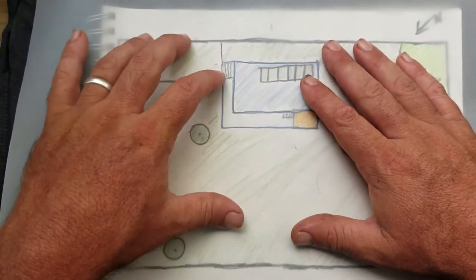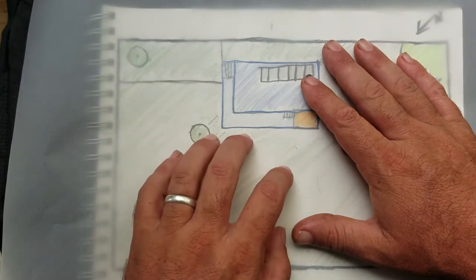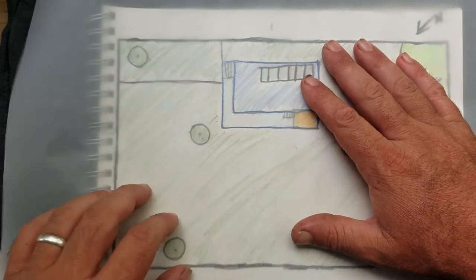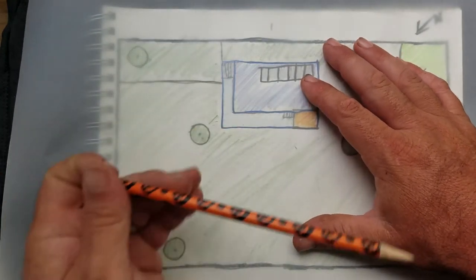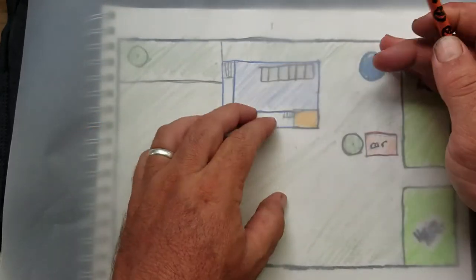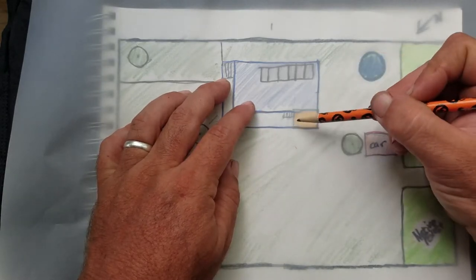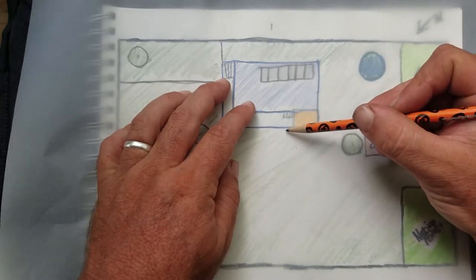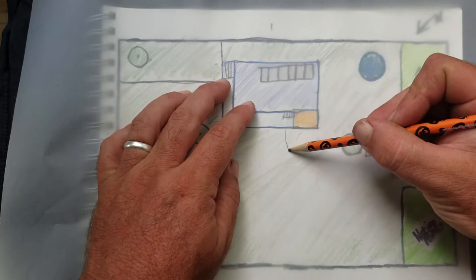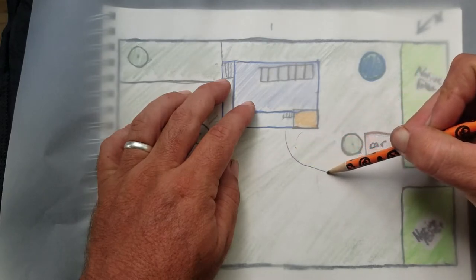So we're going to get into identifying the other zones on the property. And so what that takes is just a simple pencil, and you can begin to just highlight where your zones are. So for this property the front access is here, leading over to the carport.